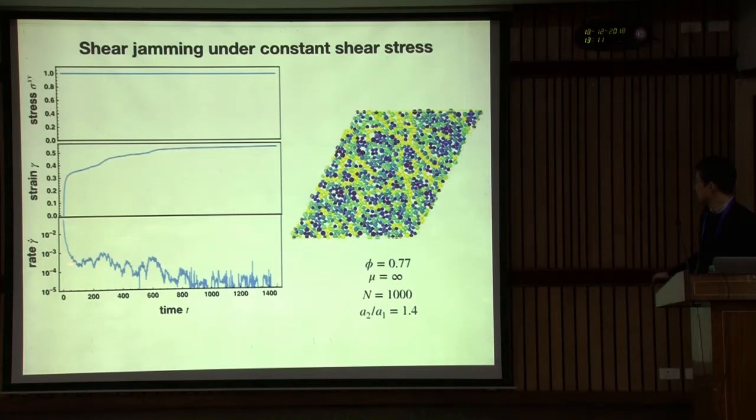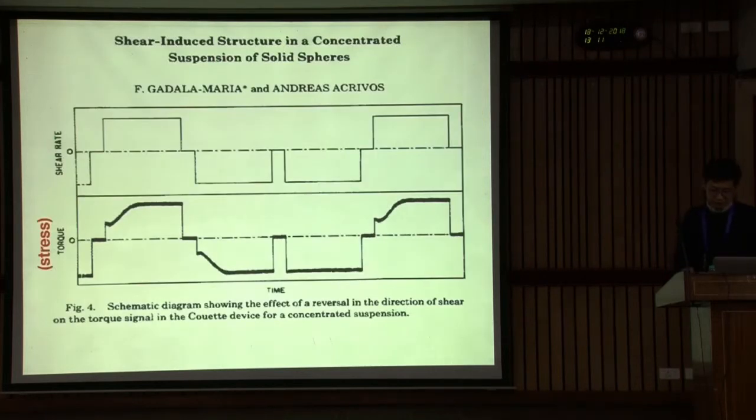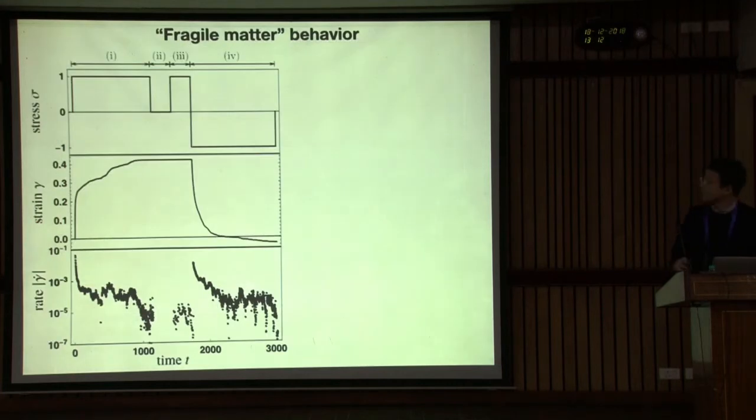Maybe, ideally, this is constant then drops to zero. This is a shear jammed state. This is a bit similar to this original shear reversal demonstration. Some structure is built and reached to steady state. But this is of course, rate is constant. All this is fluid state. But I can propose something similar in this context.